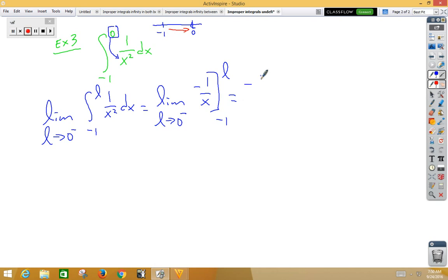If we plug in now, we get negative 1 over L minus negative 1 over negative 1. Well, that's a lot of negatives over there. This obviously is going to become a subtract 1 on this side.